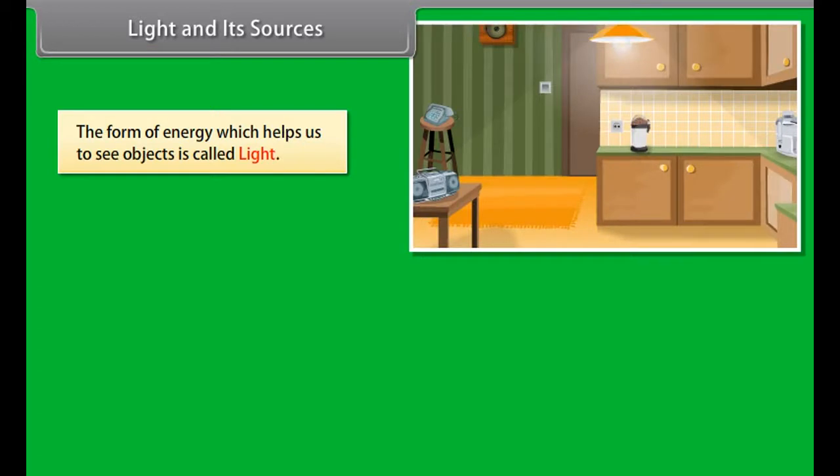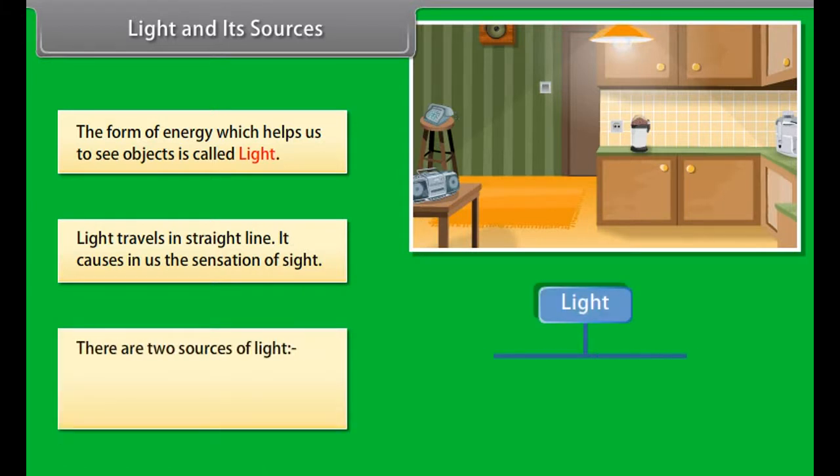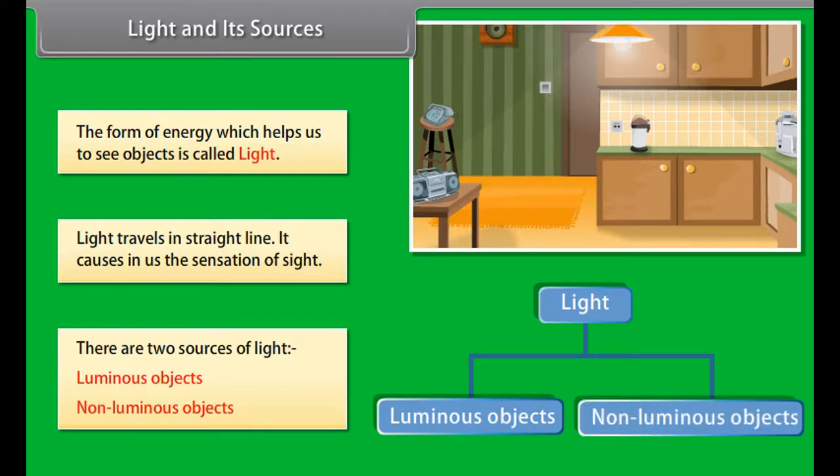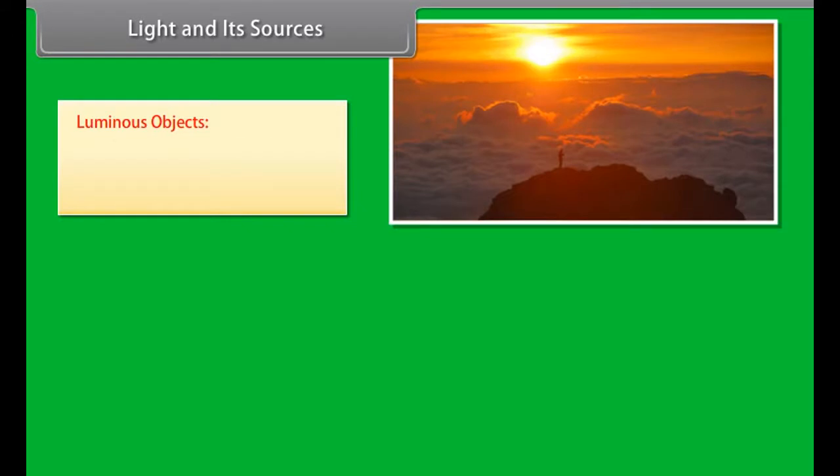Differentiate between real and virtual image. Light and its sources: The form of energy which helps us to see objects is called light. Light travels in straight line. It causes in us the sensation of sight. There are two sources of light: luminous objects and non-luminous objects.